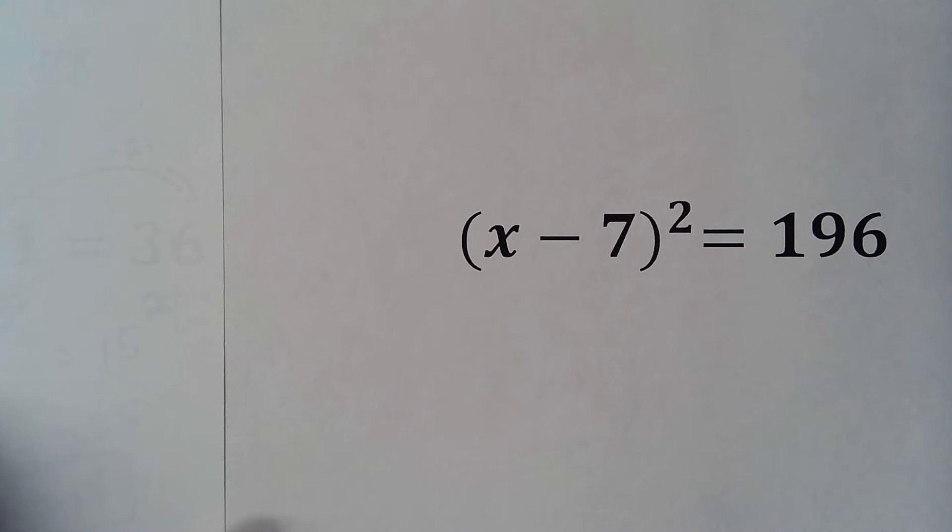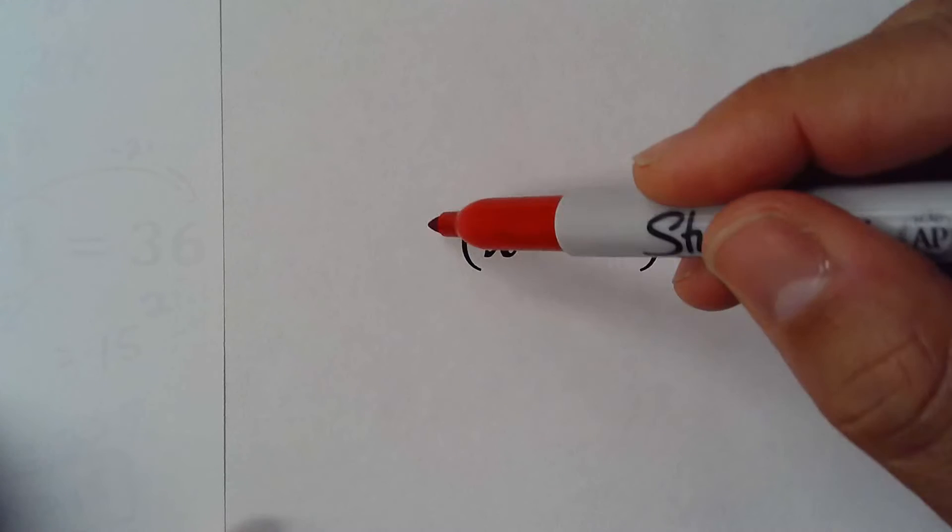So this is how to solve quadratic equations. Basically it's raised to the second power, so what we need to cancel this is the square root.